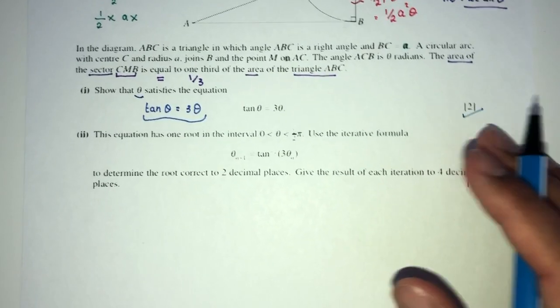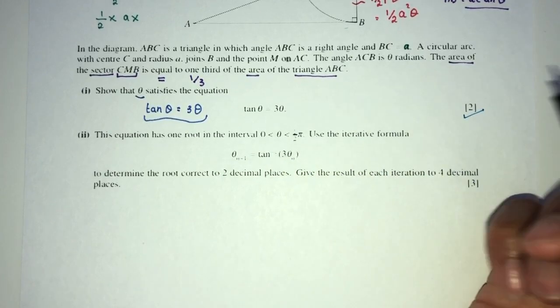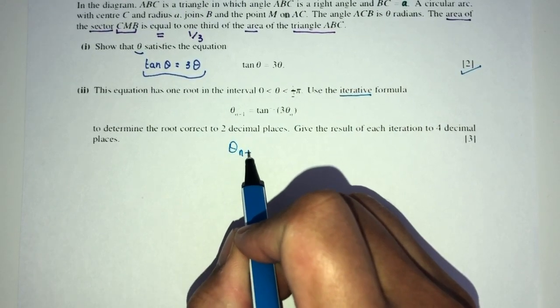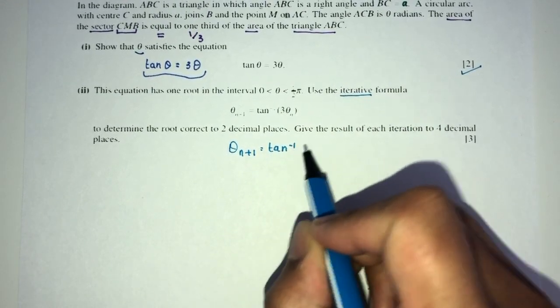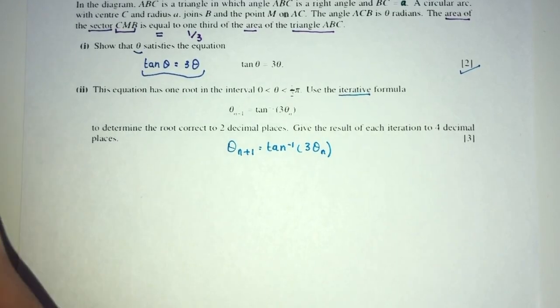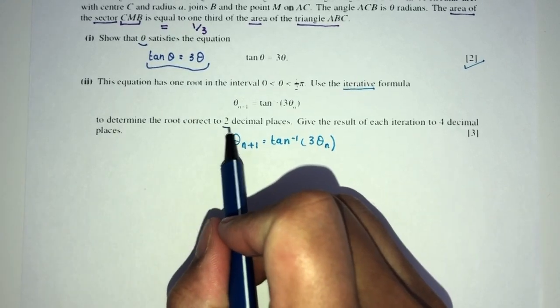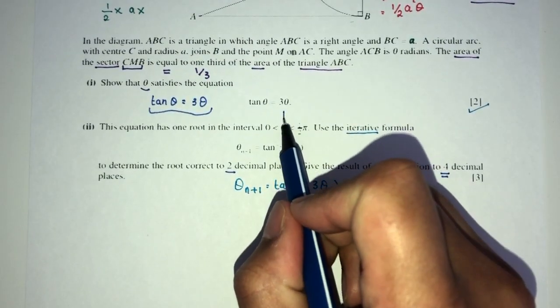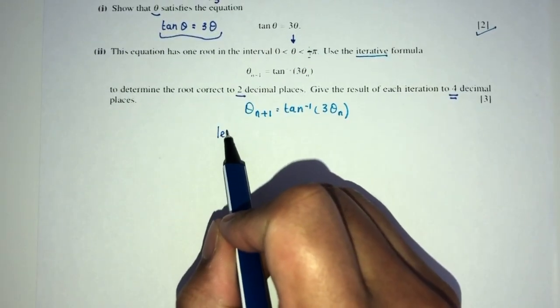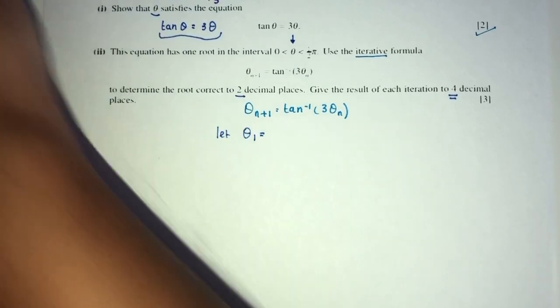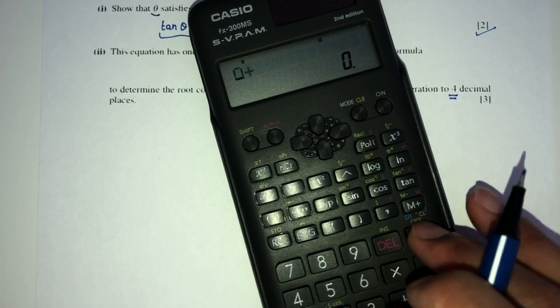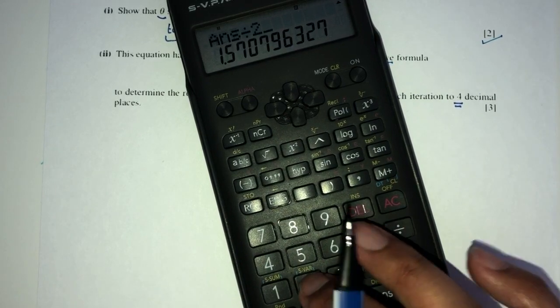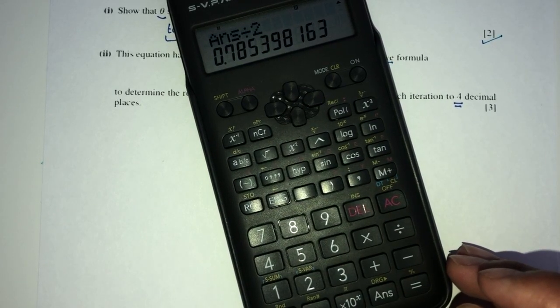Now, for part two, this equation has one root between this interval, zero and π/2. Use this iterative formula: θ_{n+1} = tan⁻¹(3θ_n). Now, we have to find the result correct to two decimal places, also giving the result of each iteration to four decimal places. So one by one. We know it lies between those two, so let's find the midpoint. Let θ₁ be 0 + π/2, so π/2 divided by 2, the midpoint. That should be 0.7854.